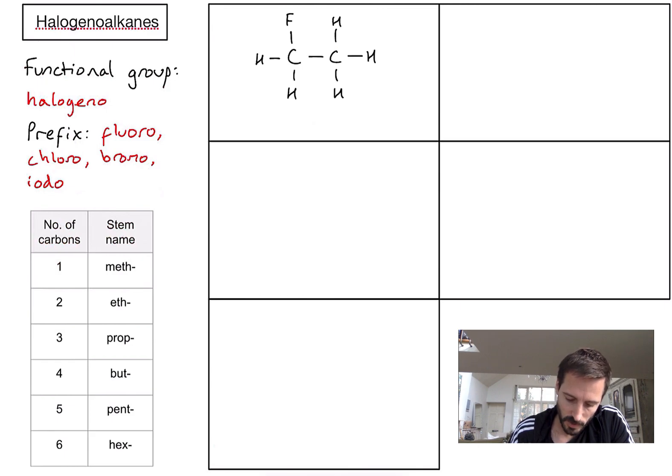Here's the first example. We've got a fluorine sticking off the side, so it's definitely a halogenoalkane. Let's count the carbons in the main chain: one, two. So the stem part of the name is eth. These names all end the same as alkanes do, so ethane is at the end of my name.